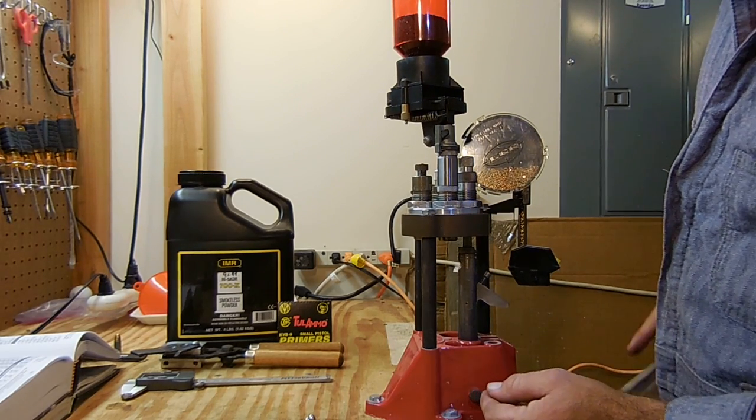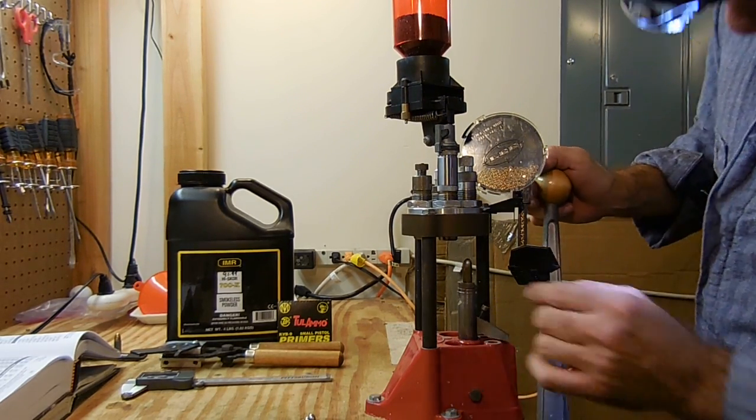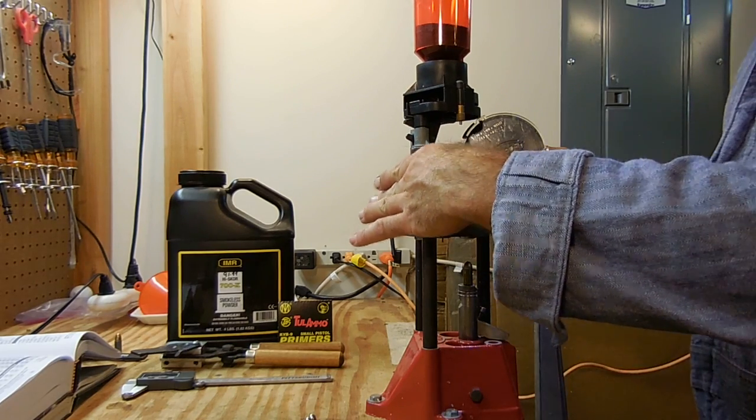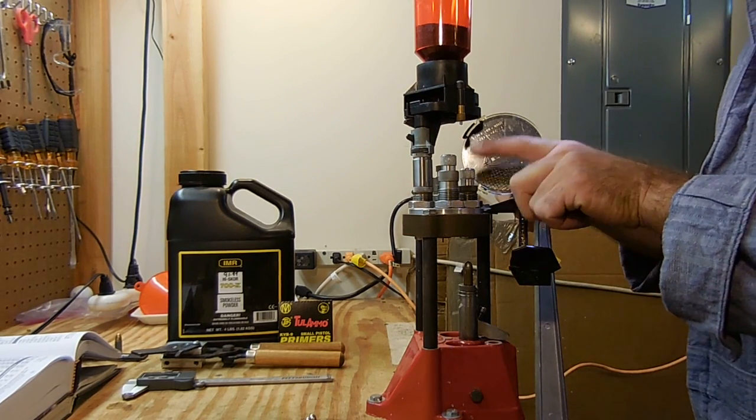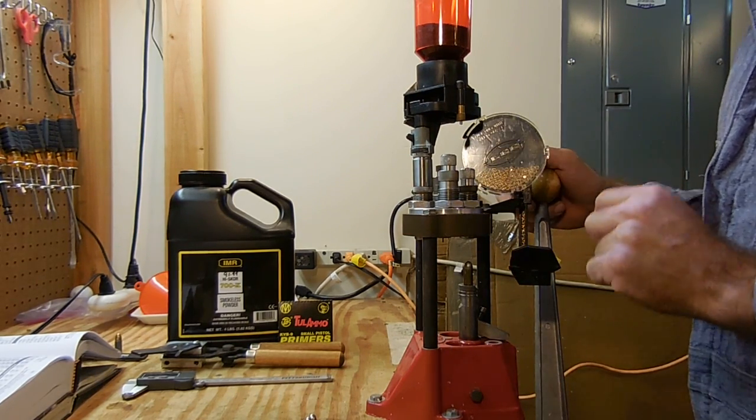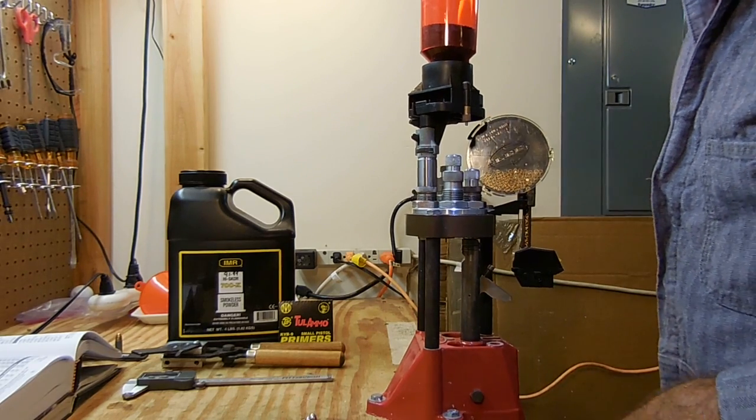I'm seating that to an overall cartridge length of 1.07 inches and then finally I'm going to use the carbide factory crimp die just to go ahead and give that a nice crimp.